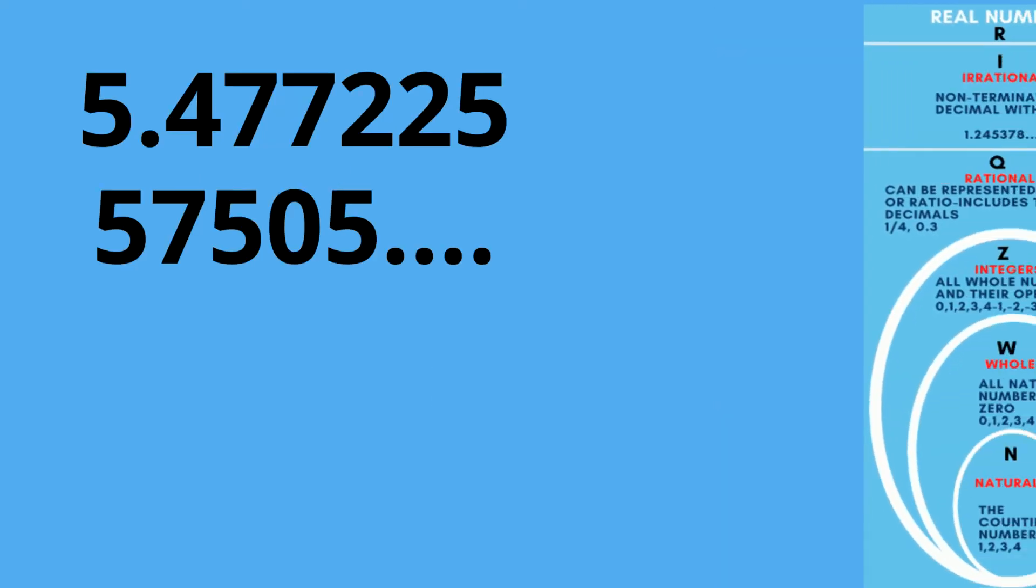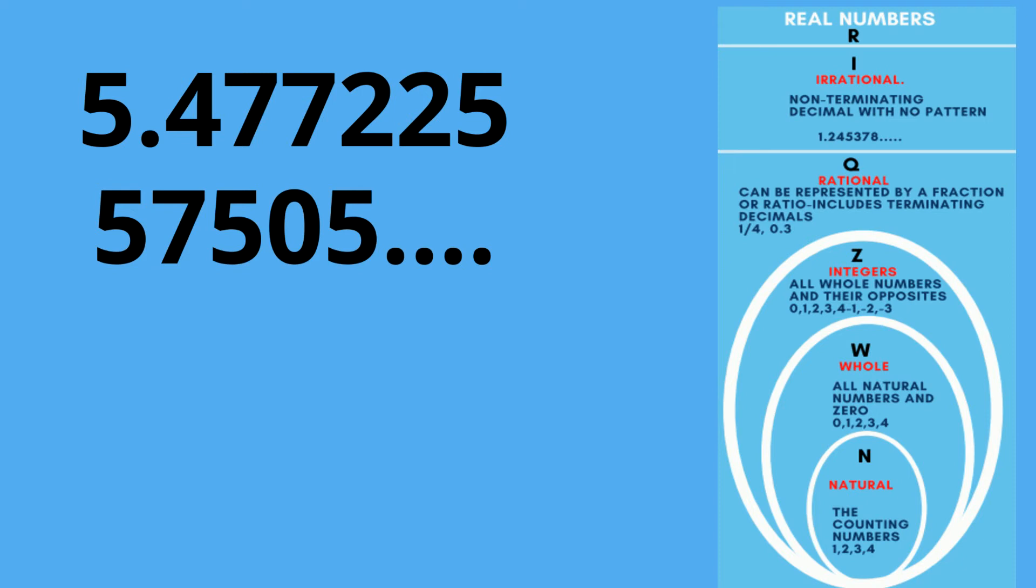5.477-2255-7505 is a non-recurring decimal. Therefore, it is an irrational number and is represented by an I, and it's also a real number.